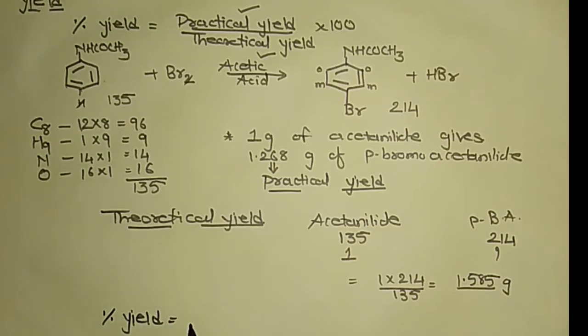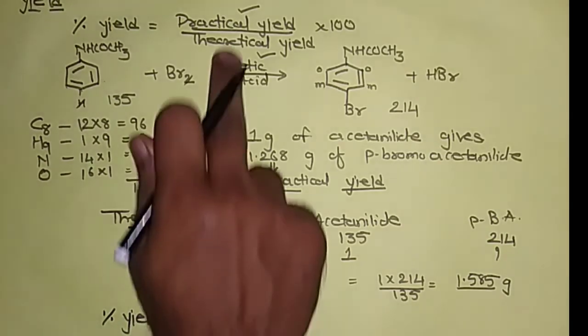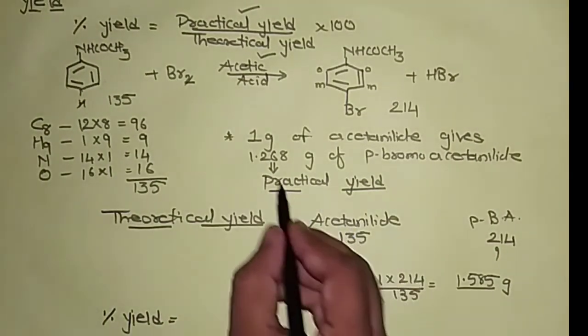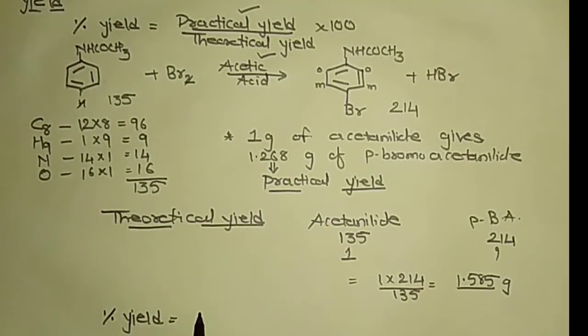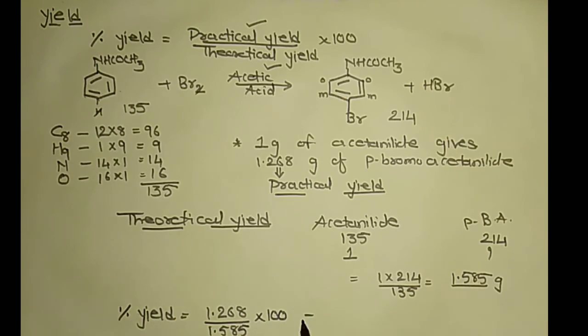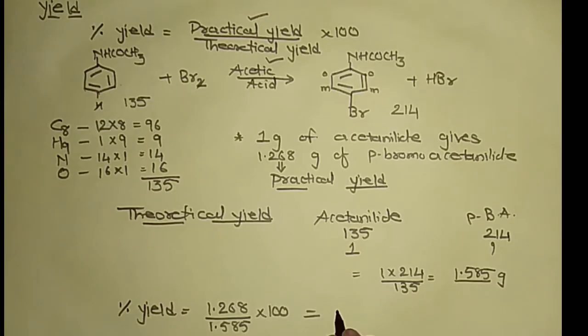Now how will we calculate percentage yield? By using simple formula: practical yield upon theoretical yield times 100. Practical yield is 1.268 upon theoretical yield 1.585 times 100. So it is 81.13%. This we call it as yield of reaction, that is 81.13% of reactant gets converted into product.